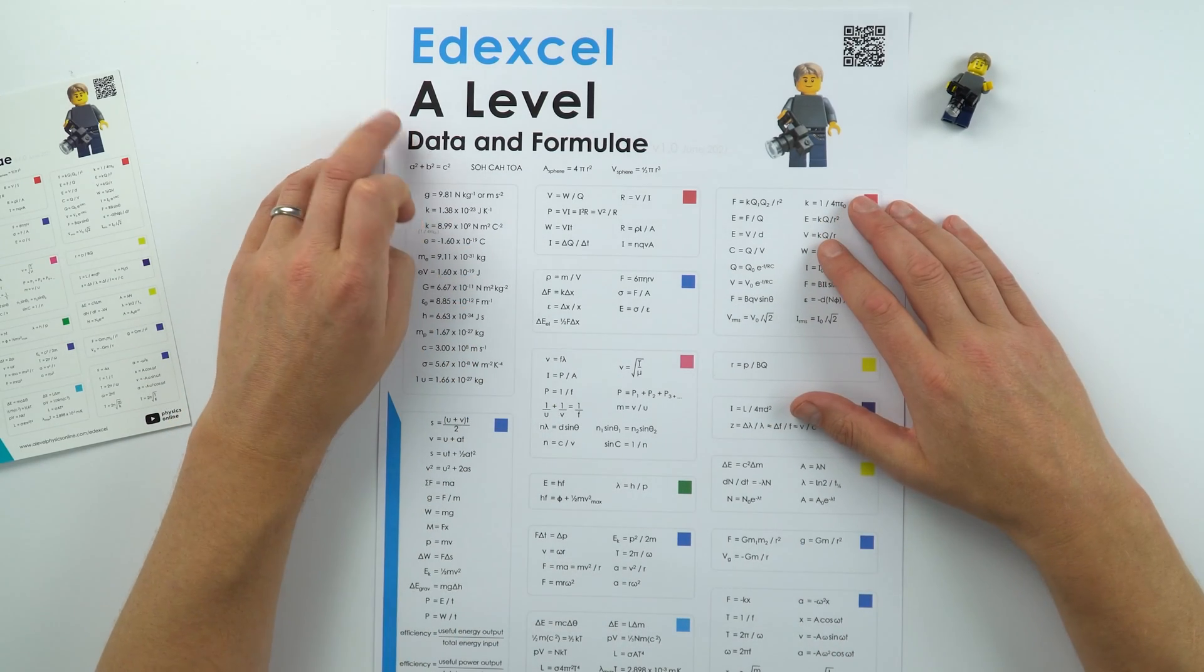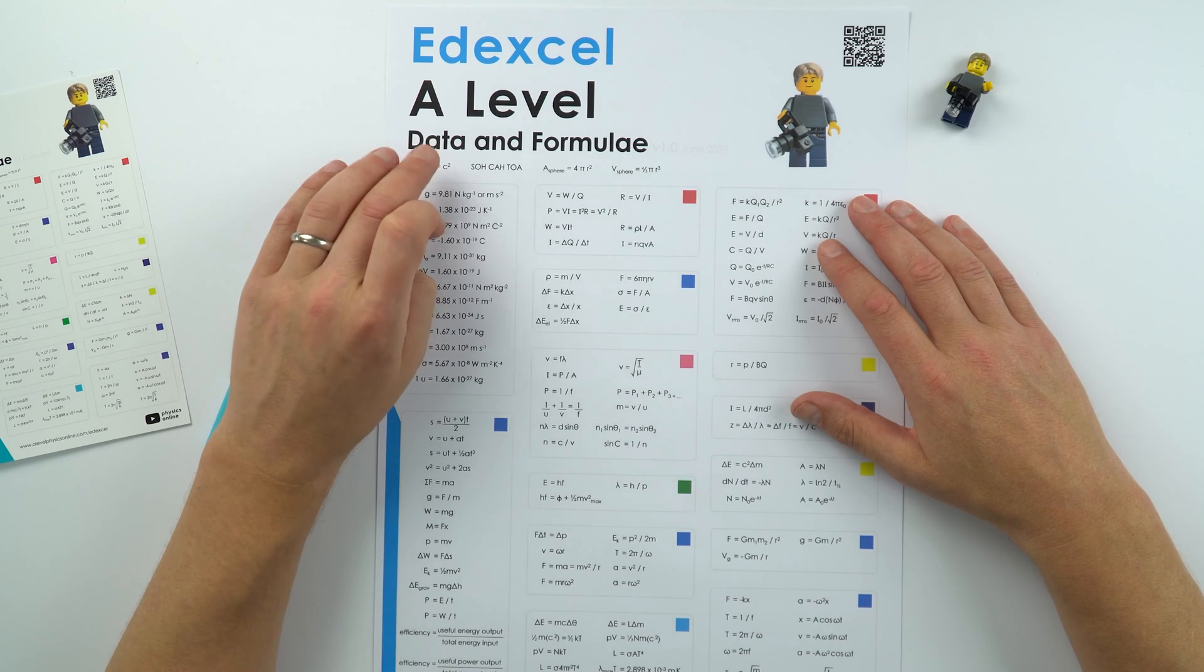So have a look at this. You can download it for free, or you can also buy a copy through my online shop. But this is the Edexcel A-level physics data and formula sheet.